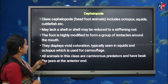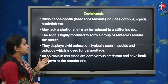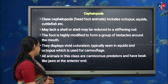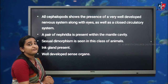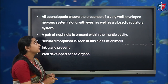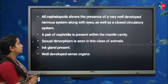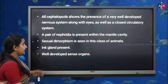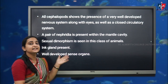The foot is highly modified to form a group of tentacles around the mouth. Cephalopods display vivid coloration, and all animals in this class are carnivorous predators with beak-like jaws at the anterior end. All cephalopods have a very well-developed nervous system along with eyes, and a closed circulatory system is present. A pair of nephridia is present for excretory purposes. Sexual dimorphism is seen in this class, and another peculiar feature is the presence of an ink sac in their body.